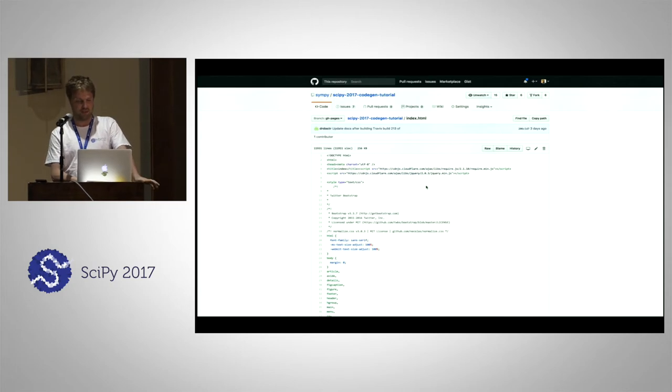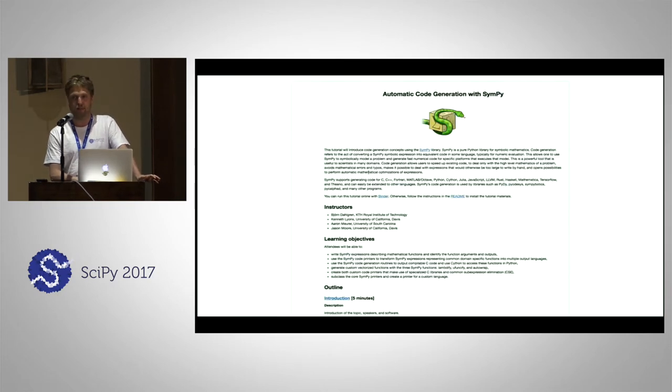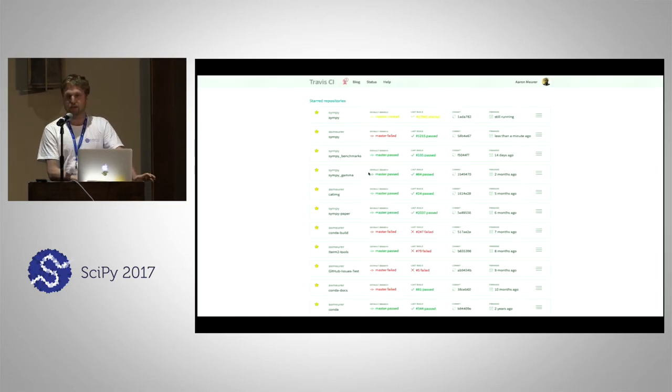You all already know what GitHub Pages is. You just put some HTML in a special branch on your GitHub repo and GitHub magically turns that into a website. Who here uses Travis CI? Yeah, so Travis, you can set up for free to run your tests every time you push a commit to your GitHub repo.